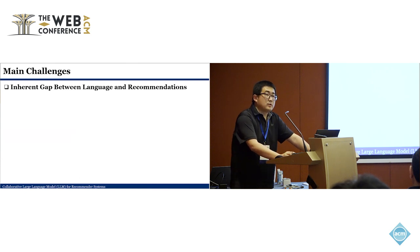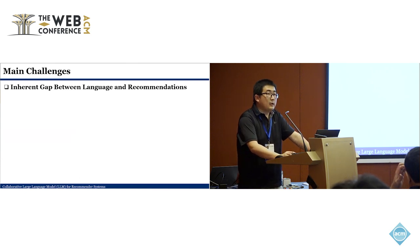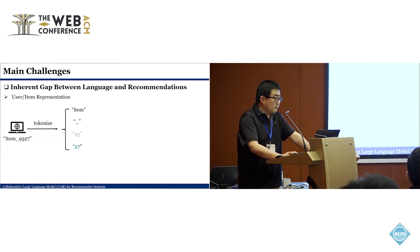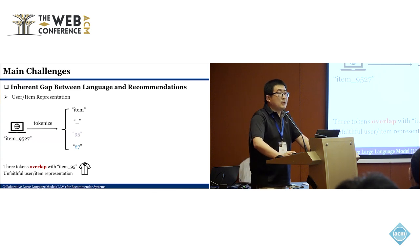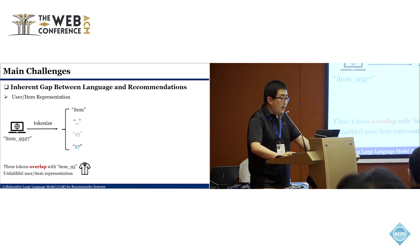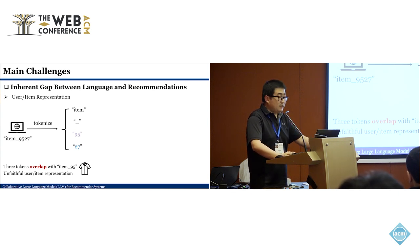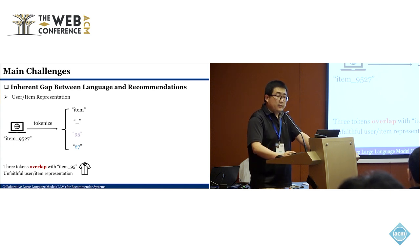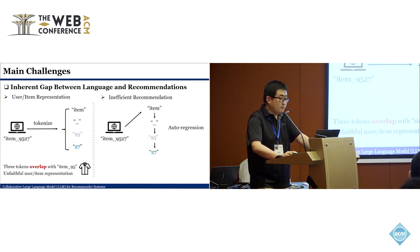There are some inherent gaps between language modeling and the recommendation task. First, for language modeling we typically tokenize words. If we tokenize item IDs — for example, a laptop item 9527 yields four tokens, while a t-shirt item 95 yields three tokens — these two very different items actually share three tokens out of four. This introduces spurious correlations between totally irrelevant items.